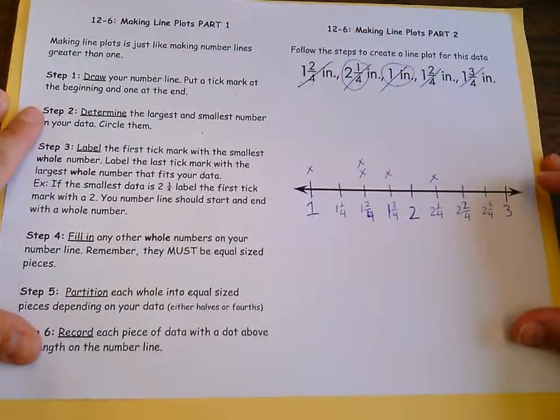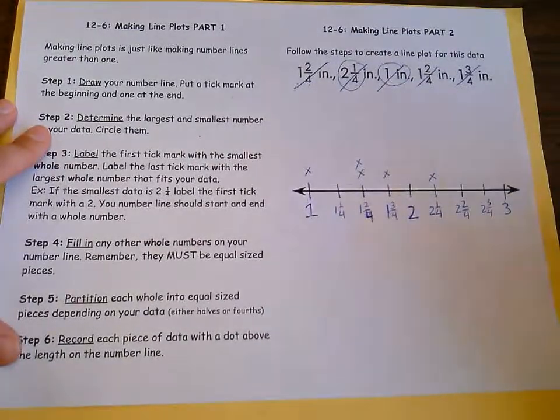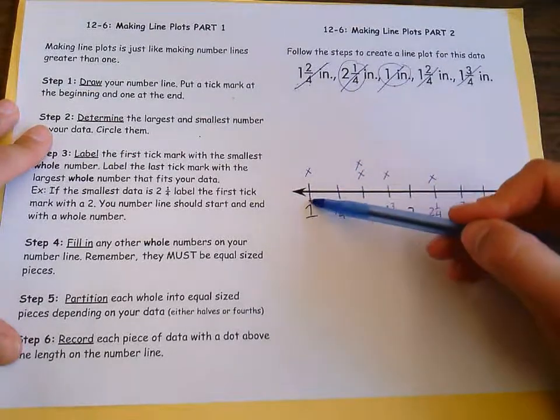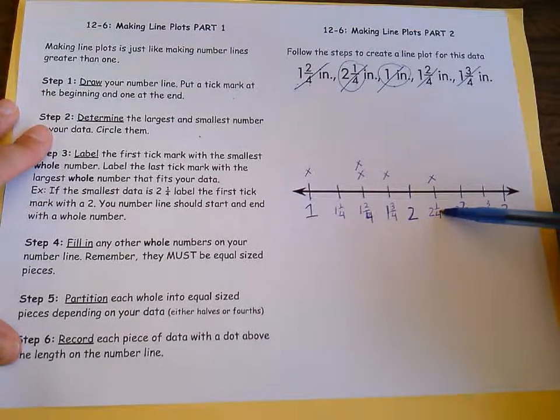So now I have my data on my number line, and now it's clear to see which one had the most number of data points right here. I know my smallest data point is one. I can easily see that two and one fourths is my largest.